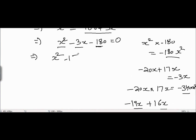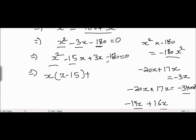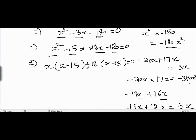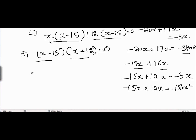So we split minus 3x into minus 15x plus 12x, giving us x squared minus 15x plus 12x minus 180 equals 0. Taking x common from the first two terms gives x(x minus 15). Taking 12 common from the last two terms gives 12(x minus 15). Now taking (x minus 15) common from both groups, we get (x minus 15)(x plus 12) equals 0. Equating both factors to zero: x equals 15 or x equals minus 12.